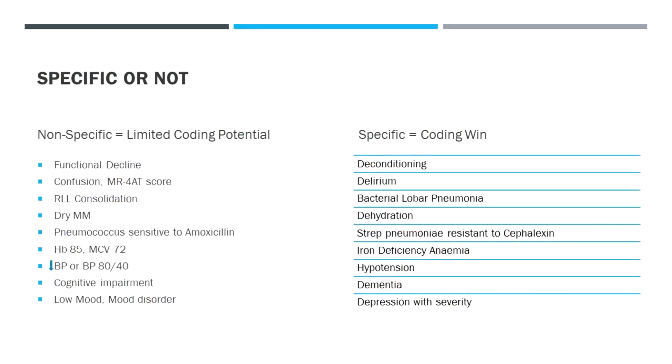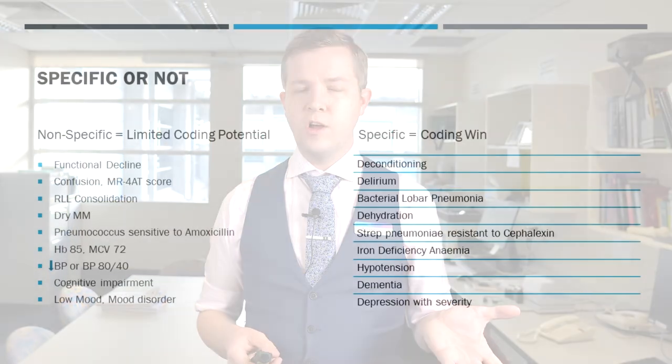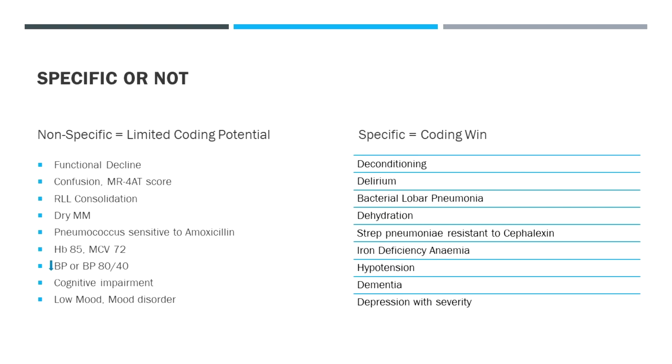There are non-specific terms like functional decline that have limiting coding potential when associated with a specific diagnosis. How that reflects in clinical performance, auditing, and funding will not be reflective of what those admissions actually involve. Instead of functional decline, think deconditioning; instead of confusion, think delirium; instead of RLL consolidation, think bacterial lobar pneumonia — that's a sign, and you need to link it with a diagnosis.